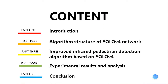I will talk about five parts. The first one is Introduction. The second part is Algorithm Structure of YOLO V4 Network. The third one is Improved Infrared Pedestrian Detection Algorithm based on YOLO V4. The fourth part is Experimental Results and Analysis. The last one is Conclusion.